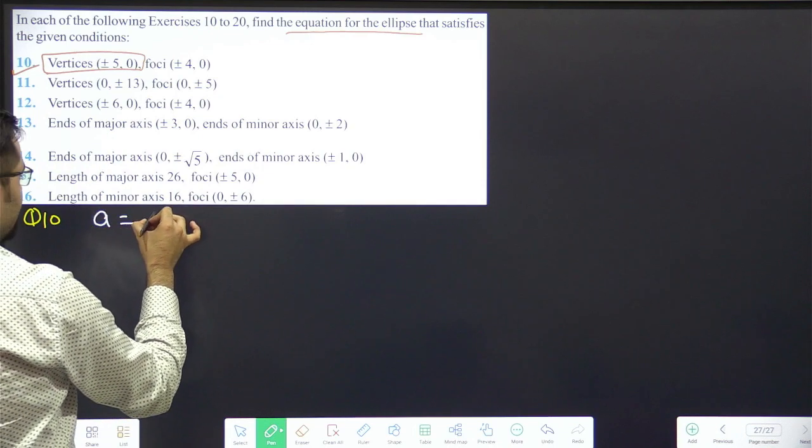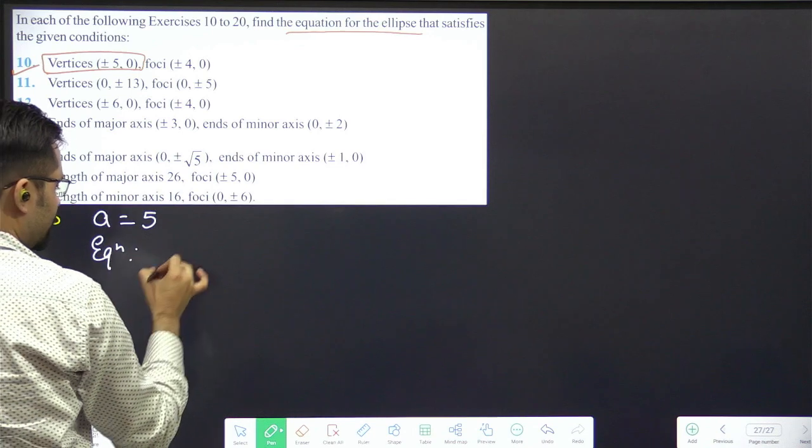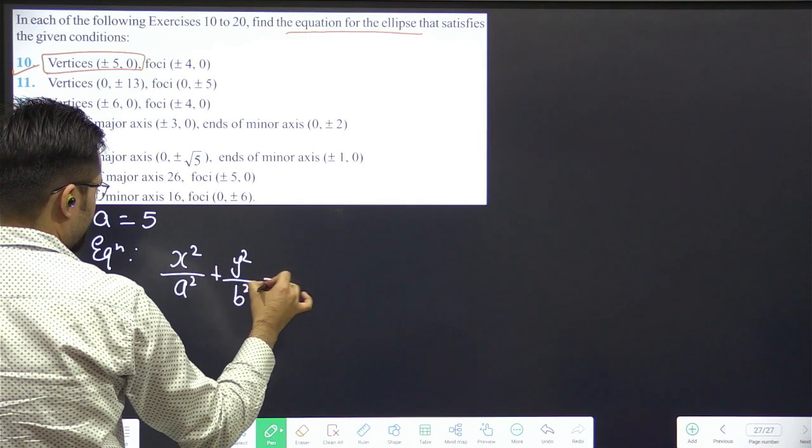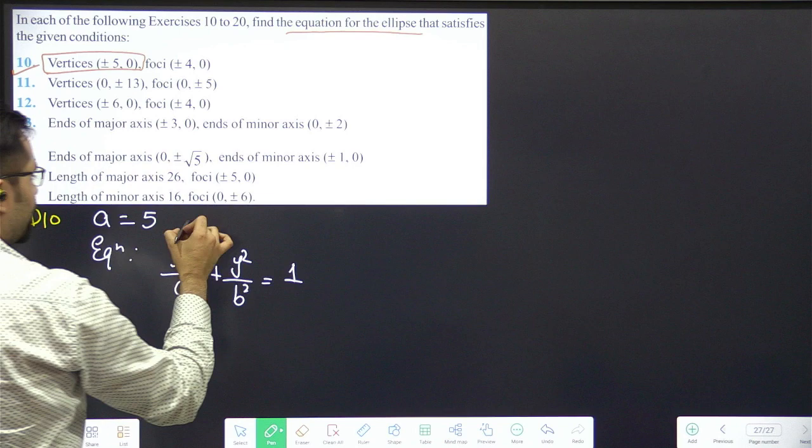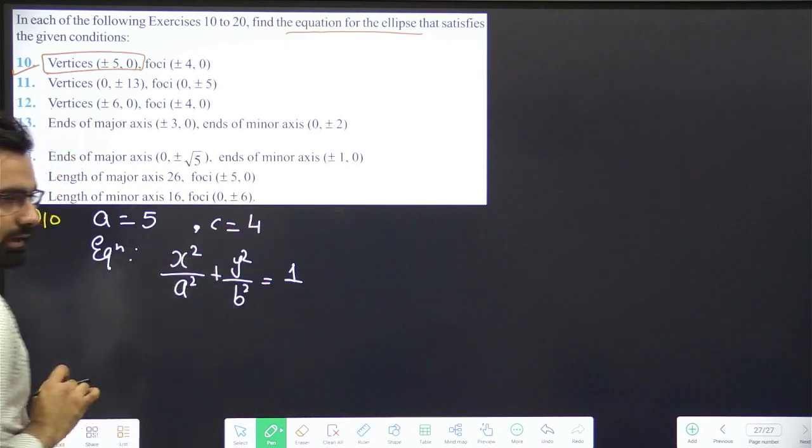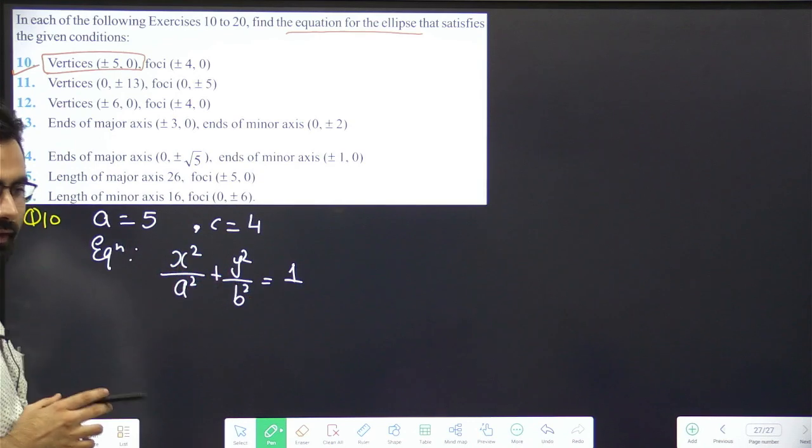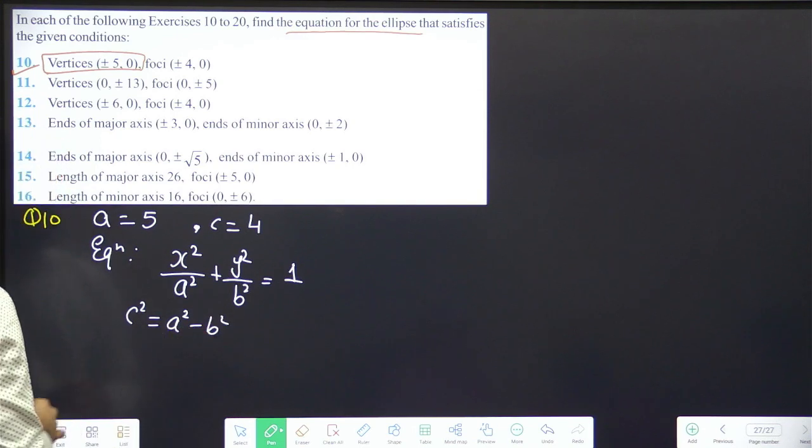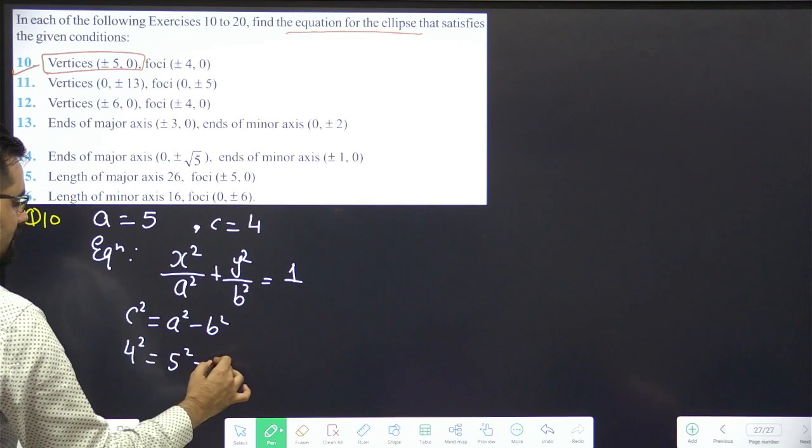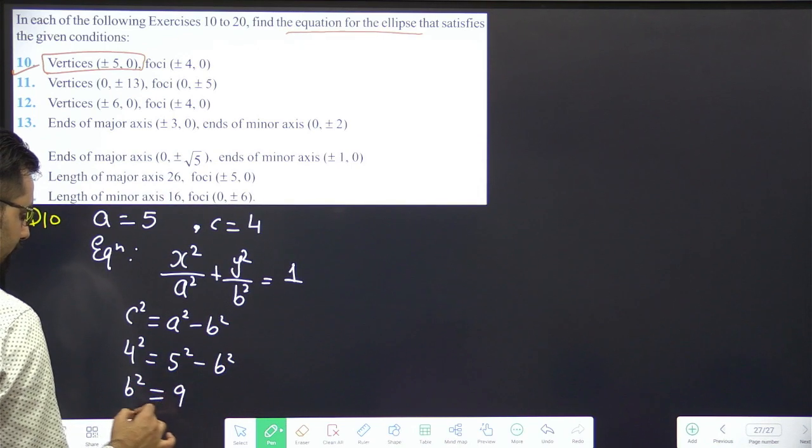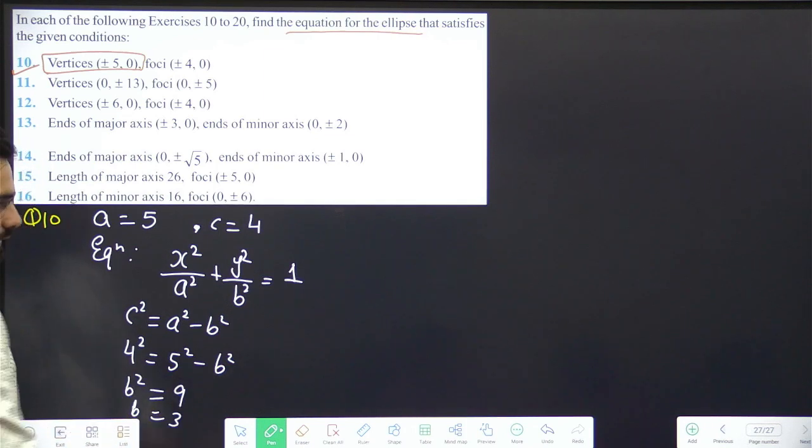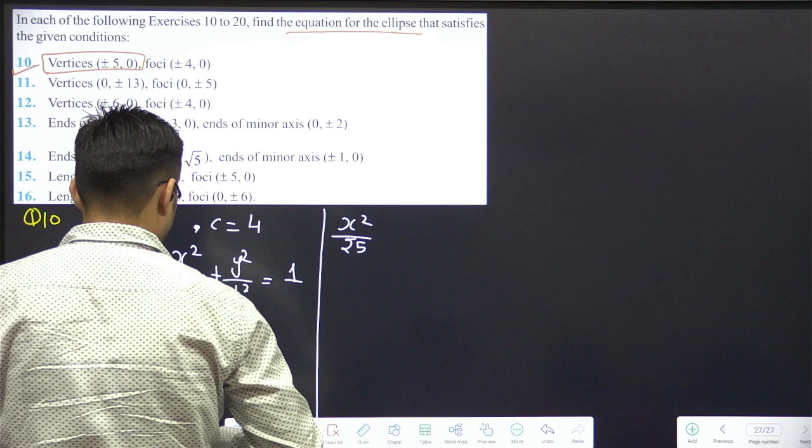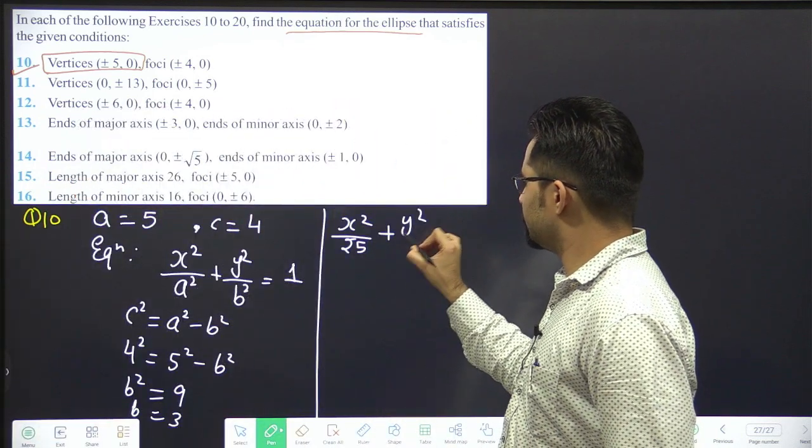A is 5. Equation what happens first? Horizontal. x square by a square plus y square by b square is equals to 1. Foci, c is 4. A is 4. So x square by 25 plus y square by 9 is equals to 1.